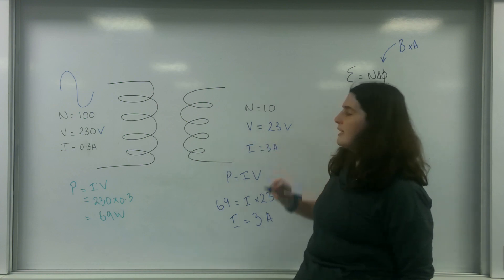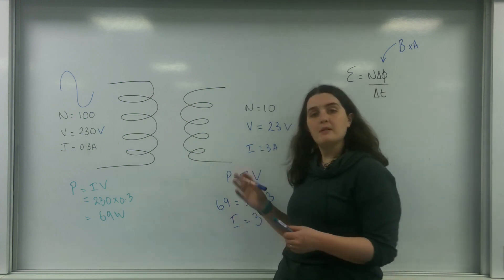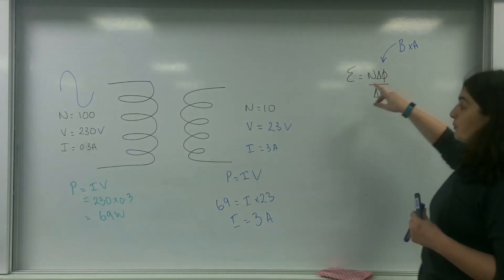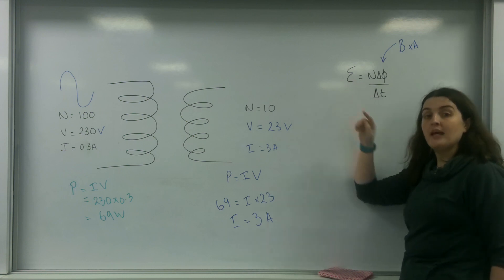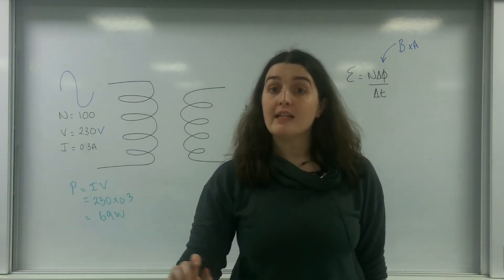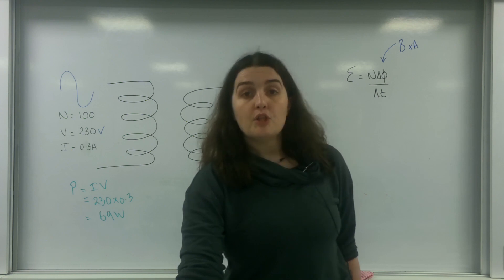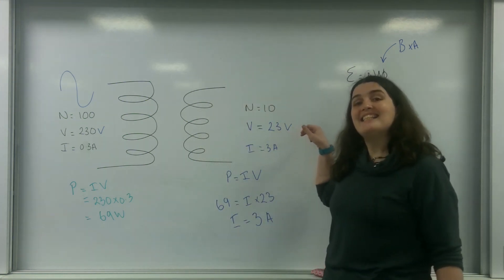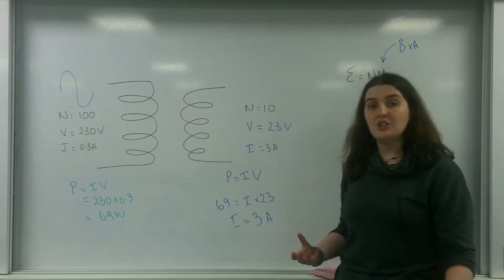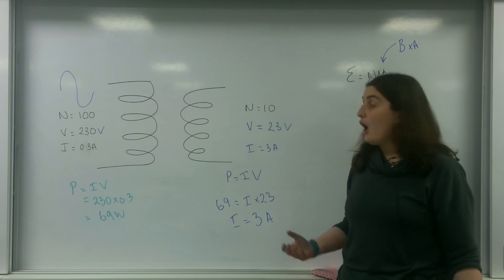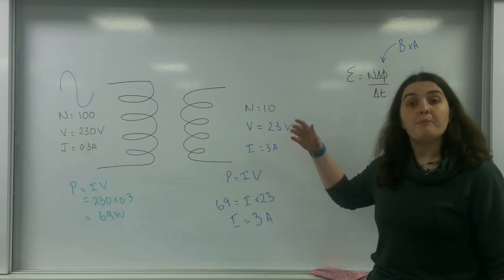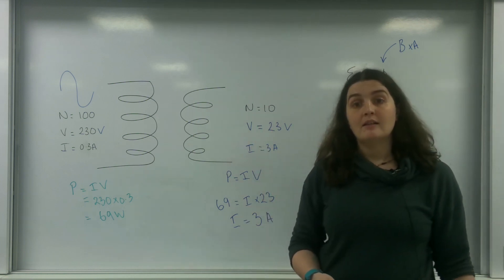As you can see, my current has increased but my potential has decreased. And this is all to do with Faraday's law. Remember that an EMF is induced before the current is induced. So what's happening here is the potential is decreasing, but to conserve energy overall, I must have more charges flowing every second to compensate for the fact that my potential has gone down.